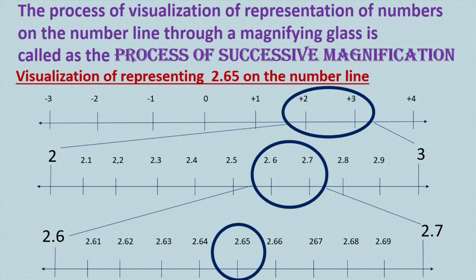This process is called the process of successive magnification. We can proceed endlessly in the same manner, successively viewing through a magnifying glass to locate any real number. The same procedure can also be used to visualize a real number with a non-terminating, non-recurring decimal expansion on the number line.